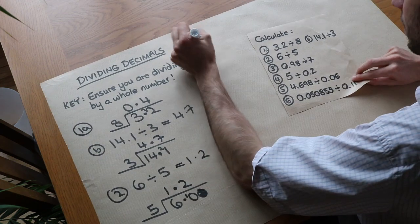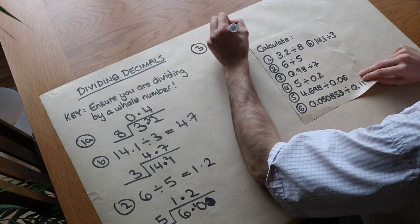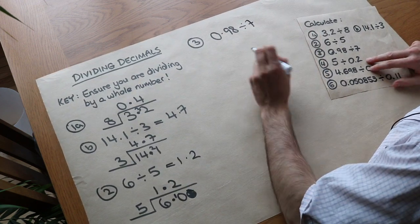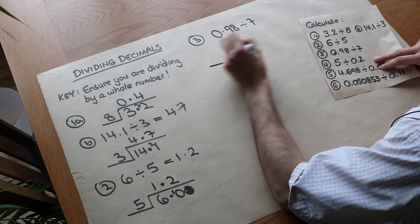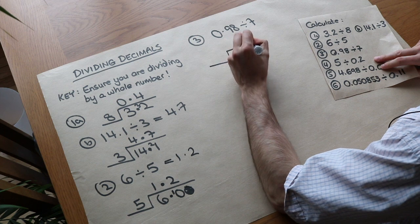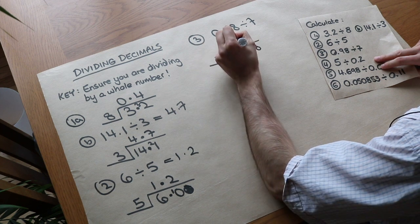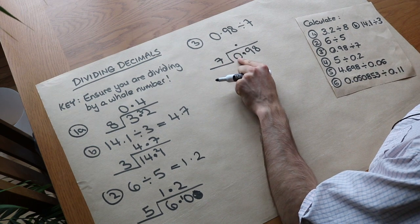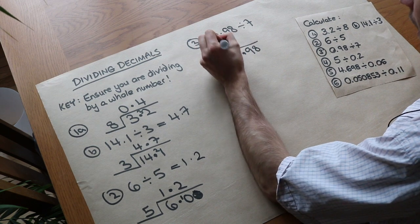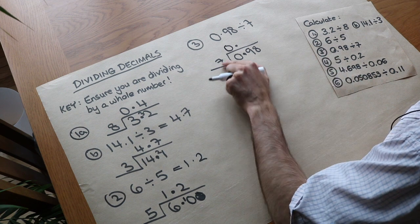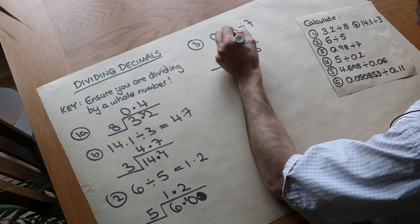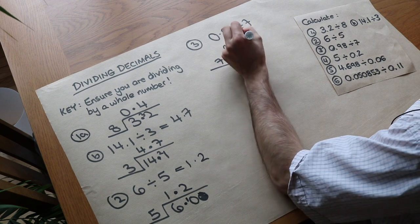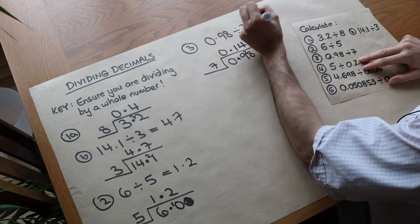Right, the next one we've got 0.98 divided by 7. We do exactly the same thing. We're dividing by a whole number so that's okay. So 0.98 divided by 7. Put the decimal point in the same place. How many times does 7 go into 0? It goes in 0 times and there's no remainder. How many times does 7 go into 9? Once, remainder 2. And then how many times does 7 go into 28? Well it's 4 times, so we get 0.14.